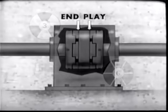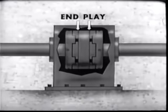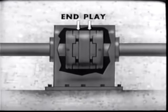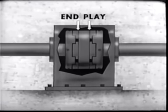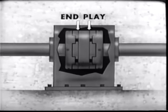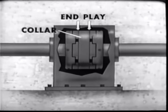Some end play, or clearance, is always necessary in a Kingsbury thrust bearing to allow proper operation of the pivoted shoes. End play is the total amount of possible movement of the shaft and collar in either direction with the bearing in its housing.